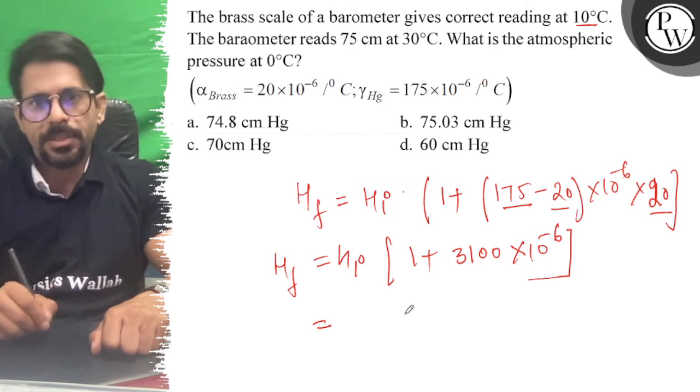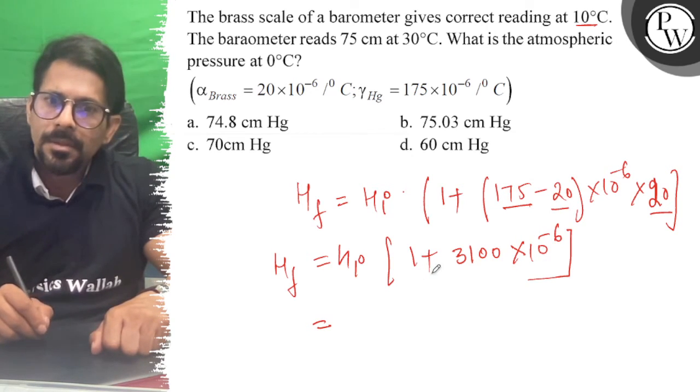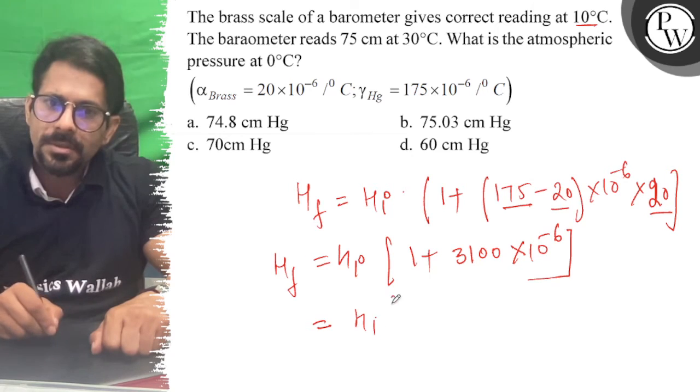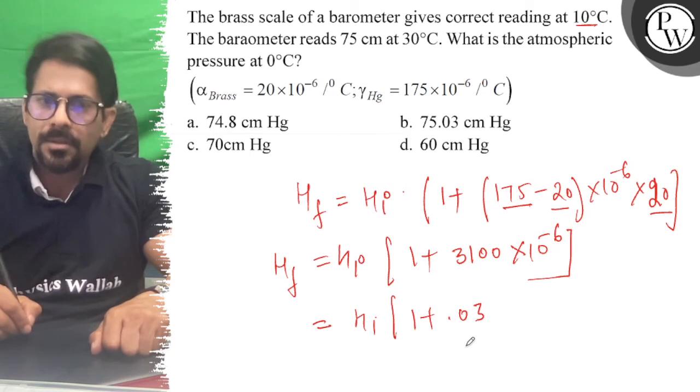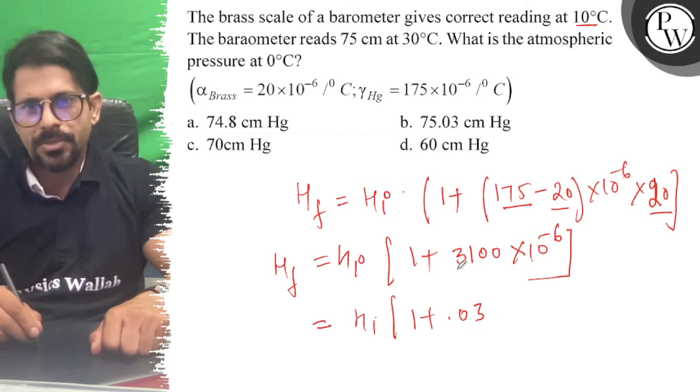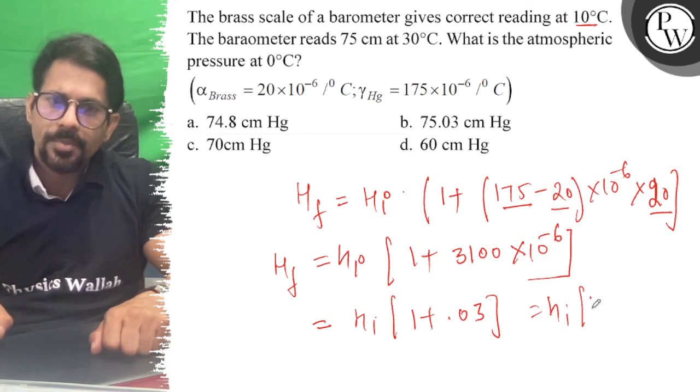So this is equal to... or here we have 1 times [1 plus 0.03]. So here we have H initial times 1.03.